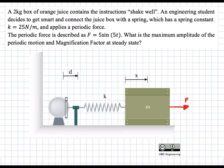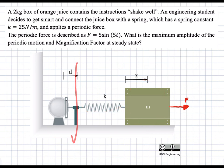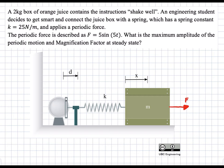In this problem, there is a juice box which is attached to a spring, and this is attached to a wall or a station. This wheel doesn't turn — it's stationary. A force F is applied to this juice box, and this force F is equal to 5 sine omega t, with omega being 5 radians per second. So this is the forcing function, and it's a sinusoidal function.